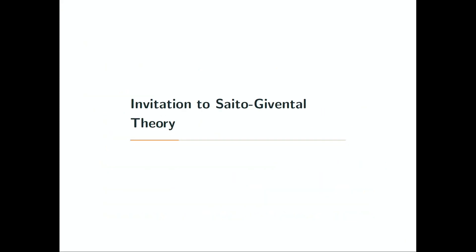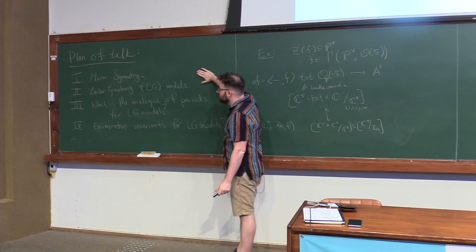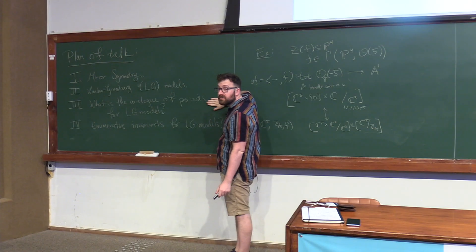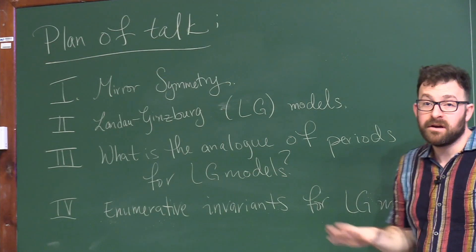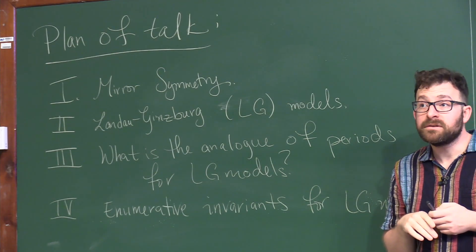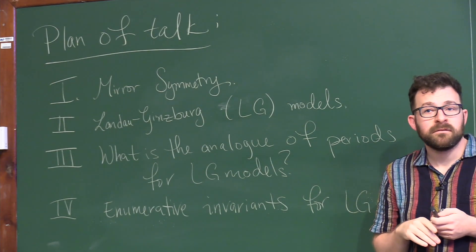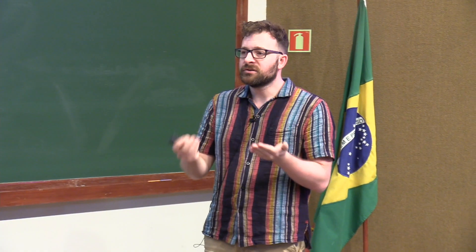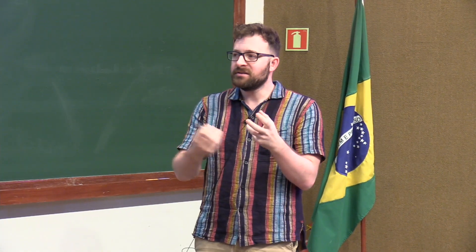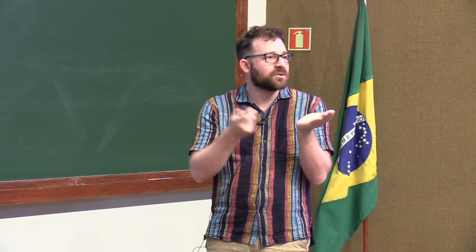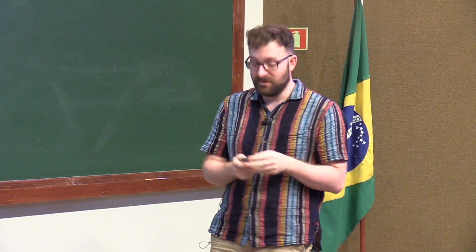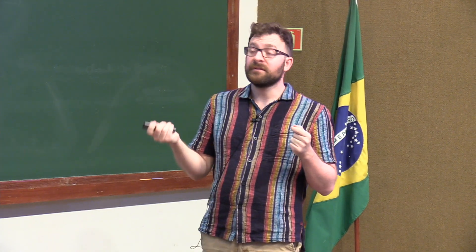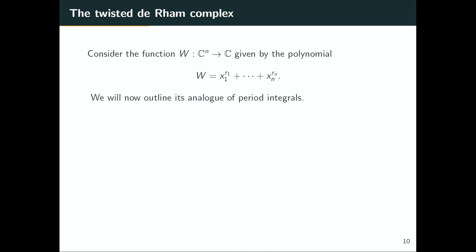Now I'm going to go to part three of my talk where I talk about what the analog to periods and Hodge theory are for Landau-Ginzburg models. I have this function, and when I think about Hodge theory and periods I usually think about a space, but here I have a function — I have to twist something in a way that allows me to actually make a cohomology theory. The way I do this is I take the de Rham complex and I'm going to twist it with the function W. I'm going to mainly do this just for the example x to the r — it's already complicated enough but it's a really beautiful computation.